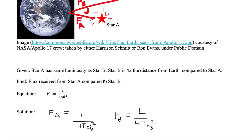divided by 4πdA². We know it's at a different distance, so I'm just going to put dA. The flux of B equals the same luminosity divided by 4πdB².